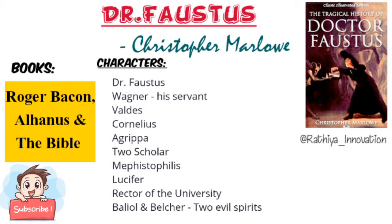Faustus thinks that through magic he would be able to command the spirits, and they can fetch for him the wealth of India, the bright walls of the ocean, all delicacies from the four corners of the world. The spirits will answer all his questions and remove all his doubts. They will reveal the secrets of foreign kings, and with their help he would be able to construct a wall of brass around Germany and make the river Rhine circle the city of Wittenberg where he lives.